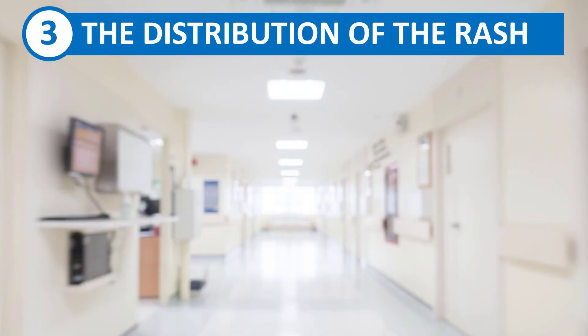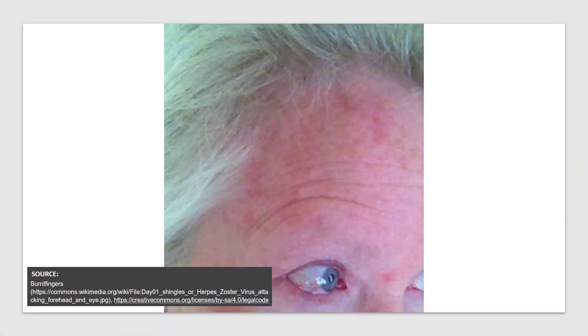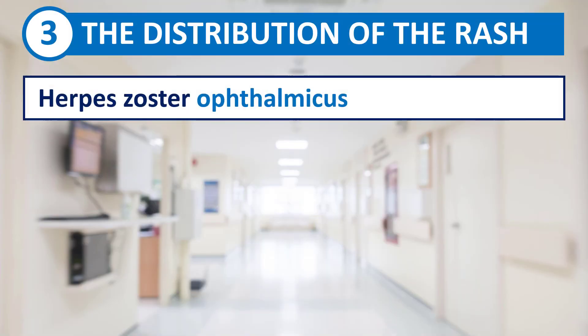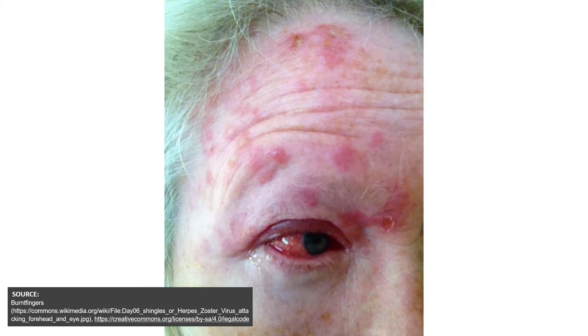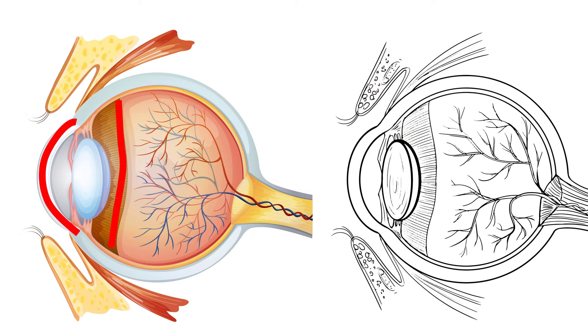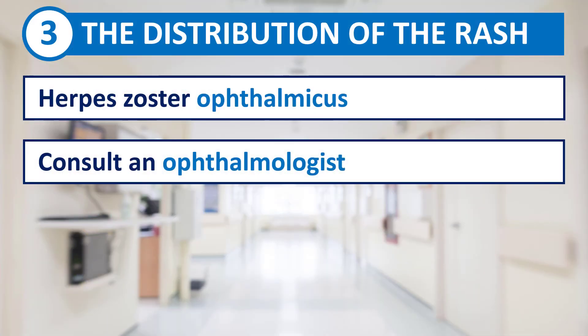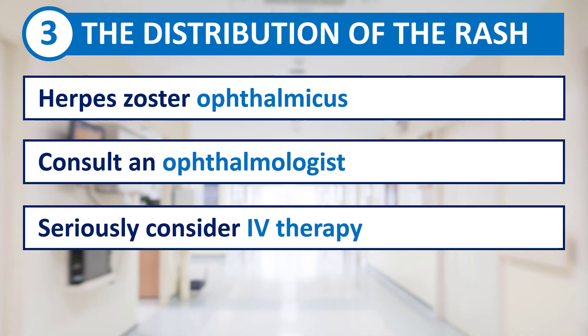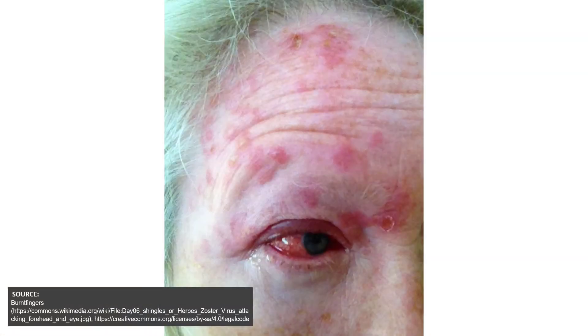The location of the rash also matters. While intercostal zoster is by far the most common, if you see a herpetiform rash on your patient's forehead and the area around the eye, this is ophthalmic zoster. This is significant because the virus can affect pretty much every structure of the eye and can result in permanent loss of vision if not treated properly. Consult an ophthalmologist — they will assess the degree of eye involvement and prescribe topical treatment like topical corticosteroids in addition to systemic antivirals. In mild cases oral antivirals can be used, but we prefer intravenous antivirals for ophthalmic zoster, especially if there is pain in the affected eye or any vision impairment.